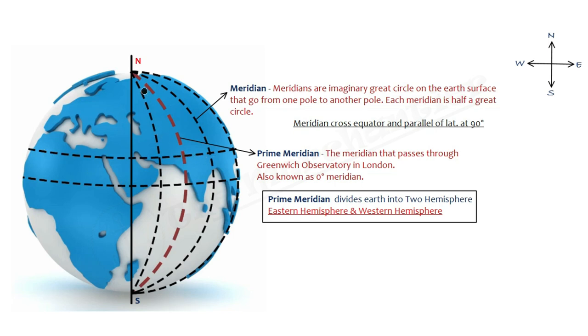Now coming to meridian. This line is North Pole to South Pole. We call them meridians. This red dotted line is prime meridian.